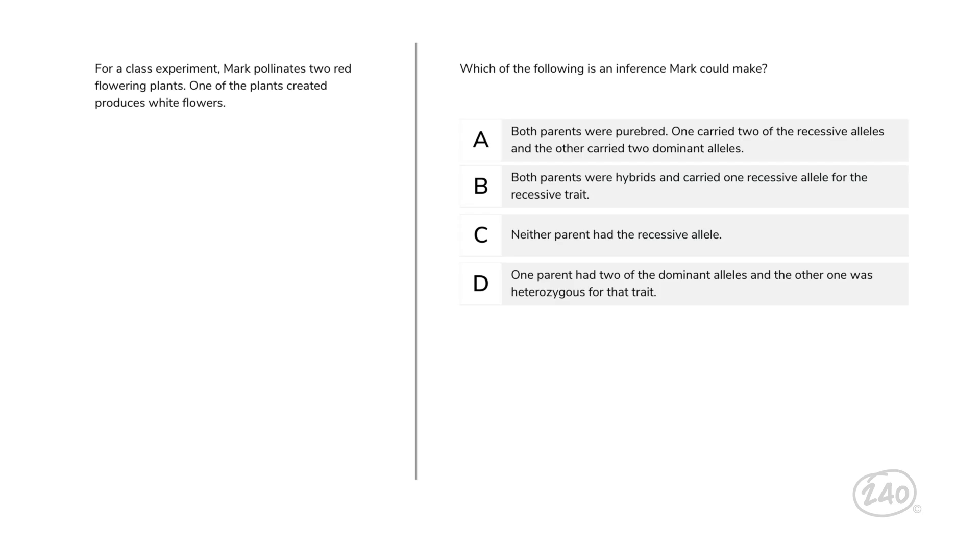Okay, let's hop into domain three, heredity and evolution of life. For a class experiment, Mark pollinates two red flowering plants. One of the plants created in the experiment produces white flowers. Which of the following is an inference Mark could make? Let's break it down. If both parents are red but produced a white flower, the gene for being red must be a dominant trait. If both parents' genotypes were homozygous dominant, their offspring would also all have red flowers. Therefore, the parents must have heterozygous genotypes. 25% of their offspring would have homozygous recessive genotypes creating white flowers. That means there's only one answer, B.